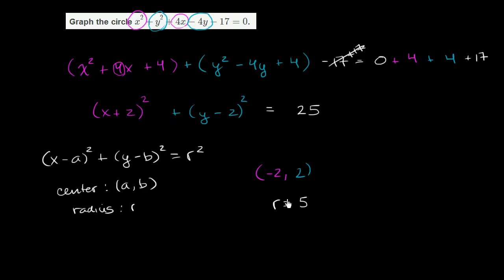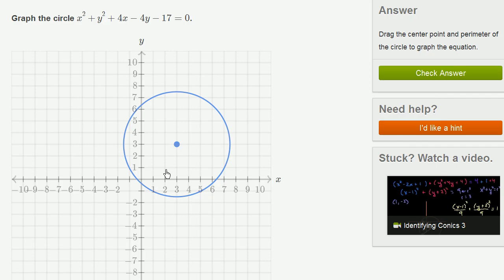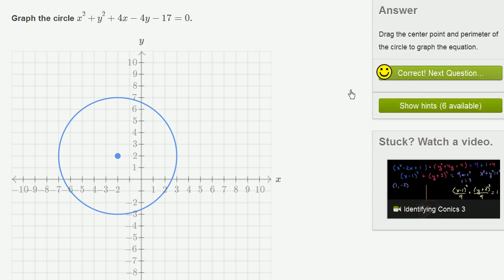So let's go back to the exercise and actually plot this. Our center is negative 2 comma 2, so that's right over there. x is negative 2, y is positive 2. And the radius is 5. So let's see, this would be 1, 2, 3, 4, 5. So we have to go a little bit wider than this. There you go. 1, 2, 3, 4, 5. Let's check our answer. We got it right.